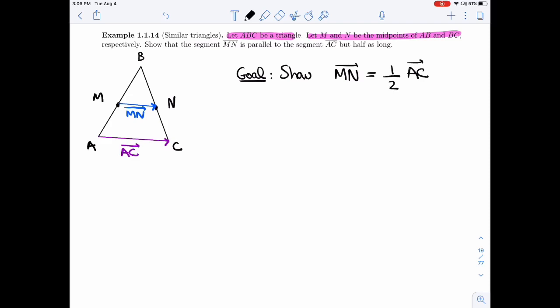So that means half of AC. That's what I want to show in vector form. That is exactly what the last sentence is asking you to do. So that's what I want to show.